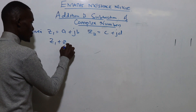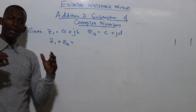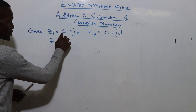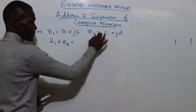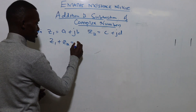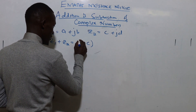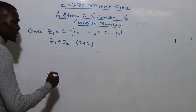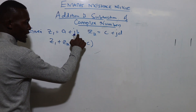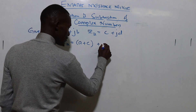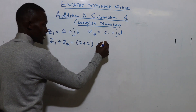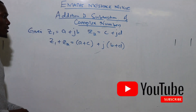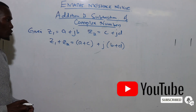For addition, z1 plus z2 is given by adding the real parts together and the imaginary parts together. The real part a and the real part c give us a plus c. For the imaginary part we have b and d, so we put the j outside and we have b plus d. That is your z1 plus z2.